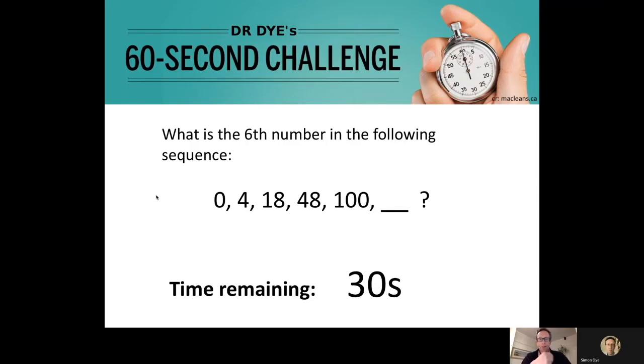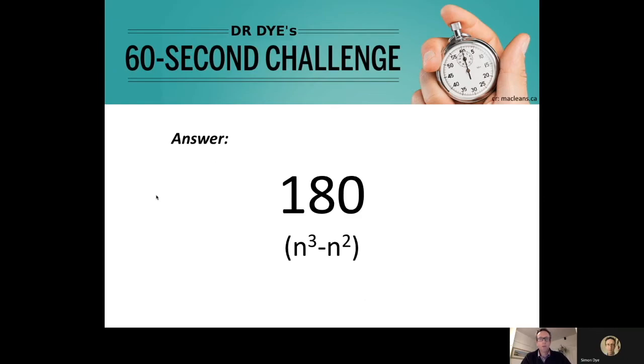Yeah, zero into one squared you get zero, and then one into two squared you get four, and then two into three squared you get 18, then three into four squared you get 48. Right, yes, yes. Okay, yeah, so essentially you've got this: the sequence here, it's n cubed minus n squared, that's essentially what you're saying.